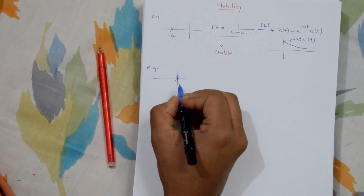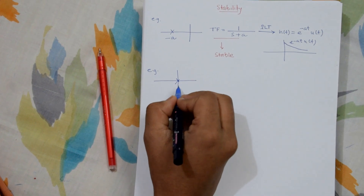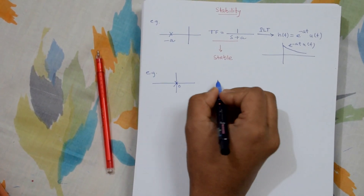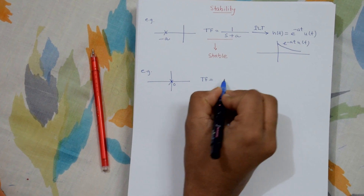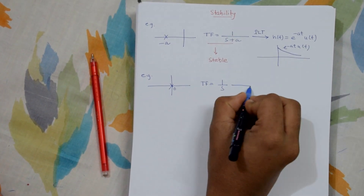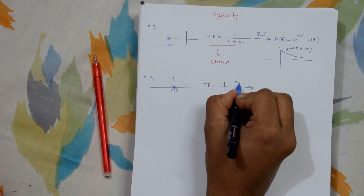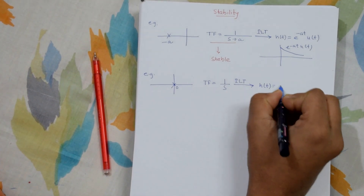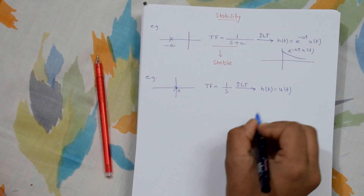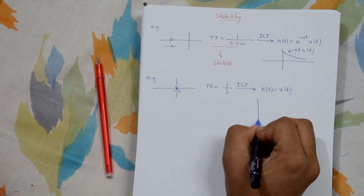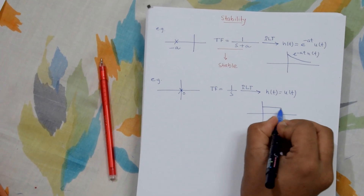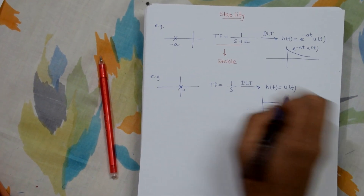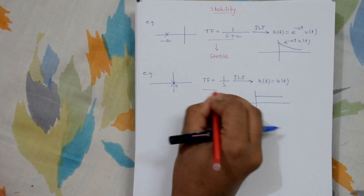In this example our pole is at zero, i.e., at the origin, so the transfer function is 1 by s. Taking the inverse Laplace transform gives h(t) = u(t). If we plot this graph we get a step function, which is marginally stable.